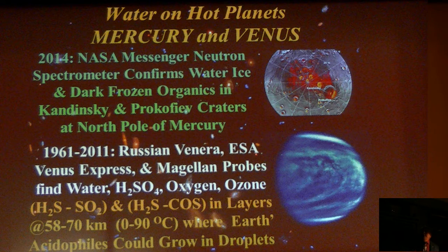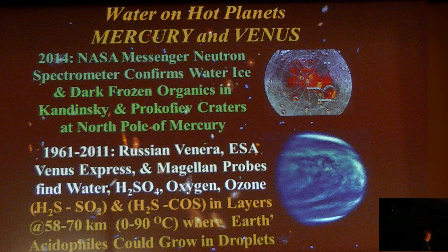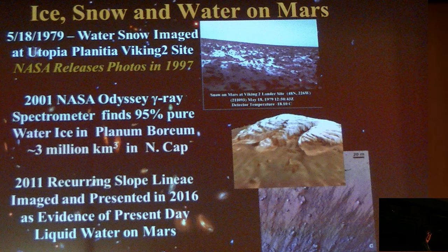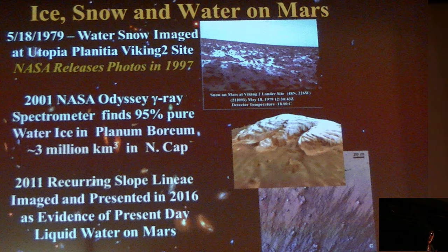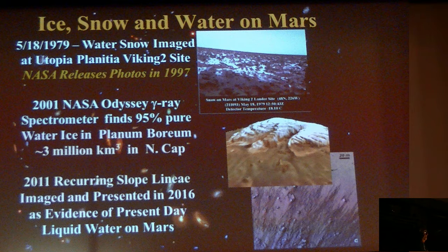Several very interesting and exciting recent developments: the Messenger spacecraft detected water ice near the polar caps of Mercury, and water and acids are found in the upper atmospheres of Venus. We've known for a long time that there was water, ice and snow on the surface of Mars. A picture taken on May 18th, 1979 shows snow on the surface of Mars at the Viking 2 lander site — that picture was photographed in 1979 but NASA released it in 1997. Here is the polar cap of Mars, with 95% pure water ice in Planum Boreum.